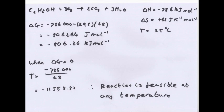So first you convert delta H into joules times by 1,000. So you've got minus 786,000 minus 298 times 68. This gives you minus 806,264 joules per mole minus one, which equals minus 806.26 kilojoules per mole minus one.